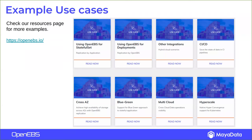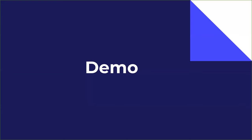Since OpenEBS provides storage and works in any Kubernetes cluster, it's useful for just about any stateful application you might want to run. Lots of users use it for GitLab and other CI/CD frameworks. We've also seen increasing adoption as a storage substrate for Kafka and other data pipelining technologies. Machine learning is another application that can really benefit from data agility, since training sets need to be made available wherever the GPUs are.